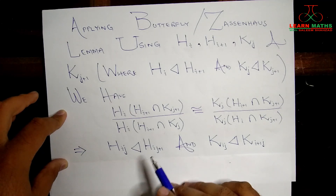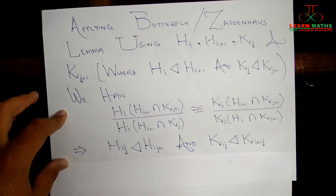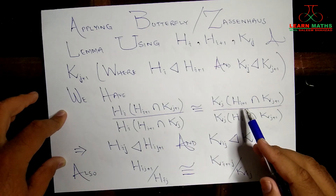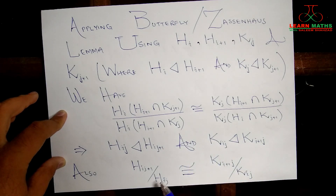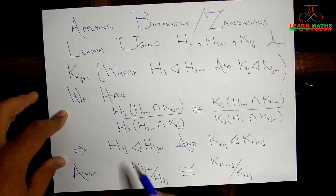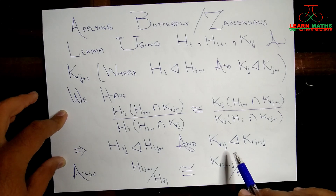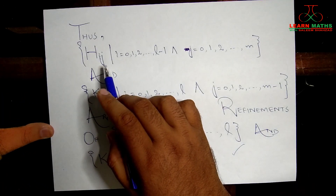What remains is to prove that the set of quotient groups of this refinement is in one-to-one correspondence with the set of quotient groups of the other refined series. As written here, H_{i,j+1} over H_{ij} and K_{i+1,j} over K_{ij} are isomorphic to each other. These are the general representatives of all quotient groups of both refined series, proving the two refinements are isomorphic.